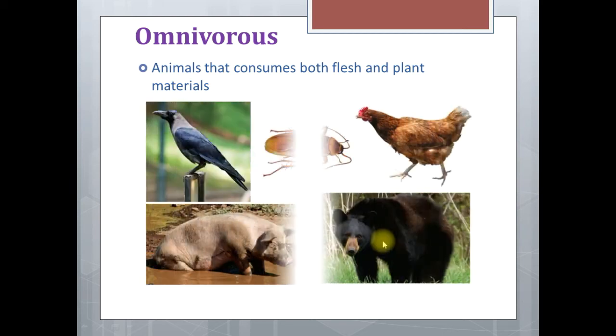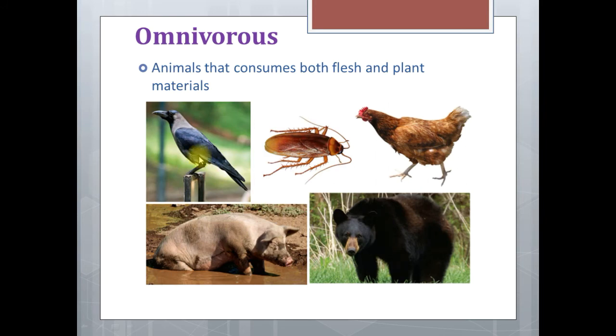Omnivorous are animals that consume both flesh and plant materials. Examples include crow, cockroach, hen, pig, and bears.